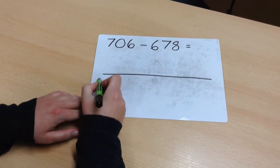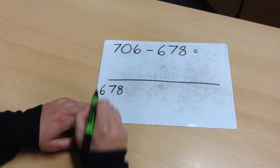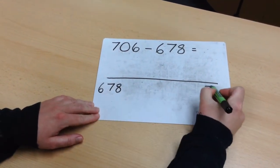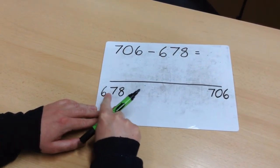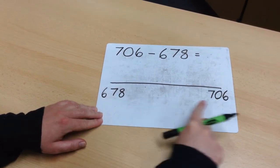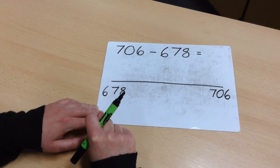The subtrahend goes on the left hand side. And the greatest number, the minuend, goes on the right hand side. I now need to count on from 678 to 706 and I'm going to use my number bonds to help me.